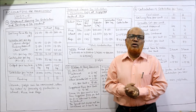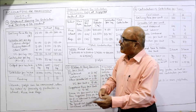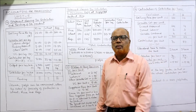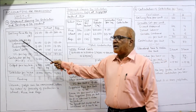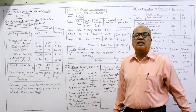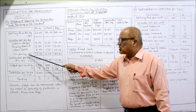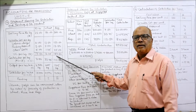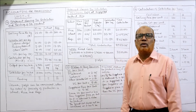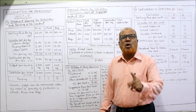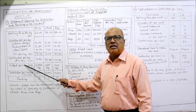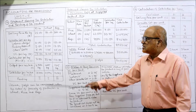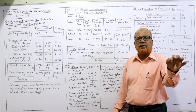Whichever crop gives more contribution per hectare of land should be given first rank. Selling price per kilogram: rice ₹25, wheat ₹50, ragi ₹300. Total variable cost per kilogram: rice ₹17.50, wheat ₹16.25, ragi ₹7.50. Selling price minus variable cost gives contribution per kilogram: rice = 25 − 17.50 = ₹7.50; wheat = 50 − 16.25 = ₹33.75.